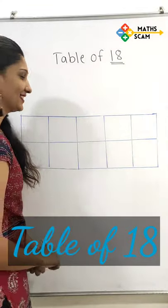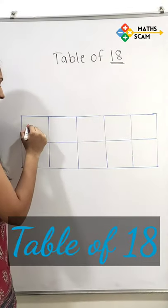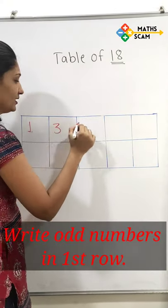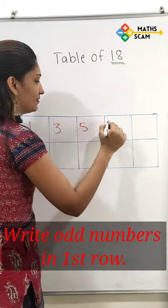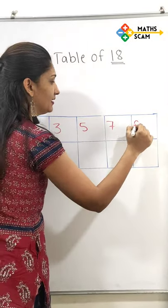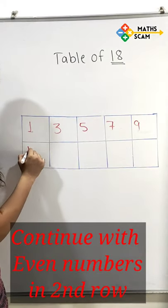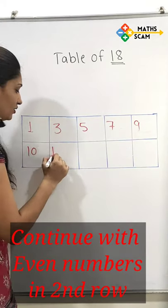Hello everyone. First, start writing odd numbers: 1, 3, 5, 7, 9. Then continue with even numbers: 10, 12.